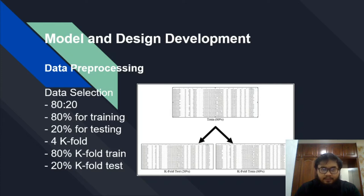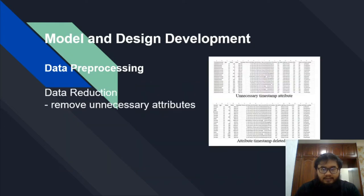From the 80% for training, we further split into K-fold: 80 for train and 20 for validation test. For data reduction, we remove unnecessary attributes — in this case, we remove the timestamp attribute.